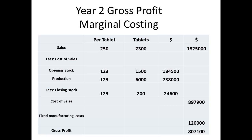In year 2, sales are $1,825,000, and cost of sales calculated at $897,900. We must also take into account the $120,000 fixed costs again. This gives us a figure for gross profit of $807,100.